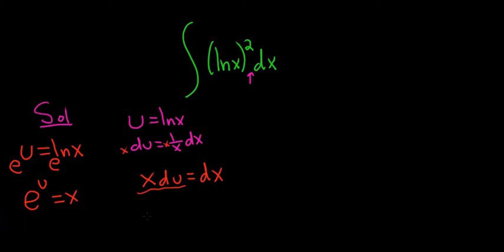So then we have e to the u equals x. So that means that the x becomes e to the u, and then we have du, and that's equal to dx. All right, now we're in a good place. We can make the substitution.